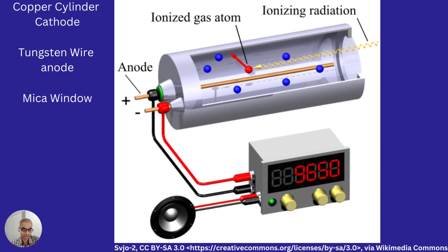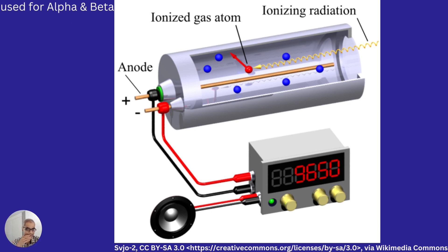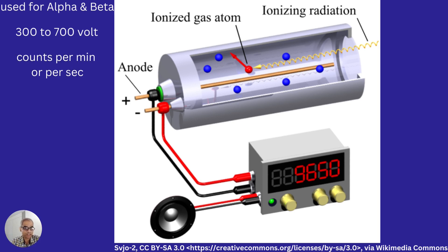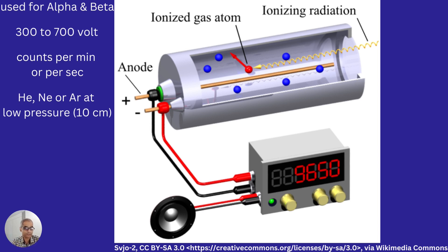When electrons reach the anode, a signal is created which can be detected, and we can also hear the click sound. This instrument can be used for detection of alpha and beta decay. The voltage supplied is normally in the range of 300 to 700 volts, and we can measure counts per minute or per second. The gas used is an inert gas — helium, neon, or argon — kept at low pressure of about 10 centimeters.